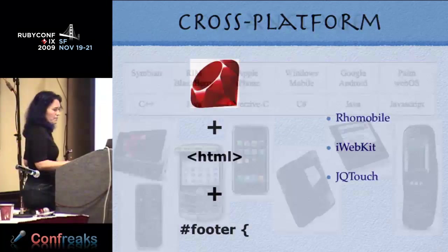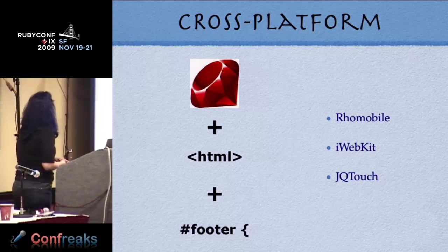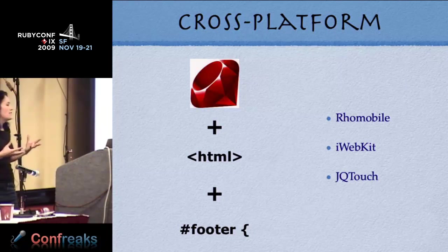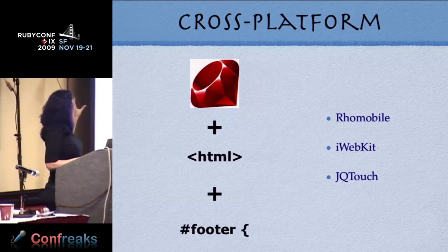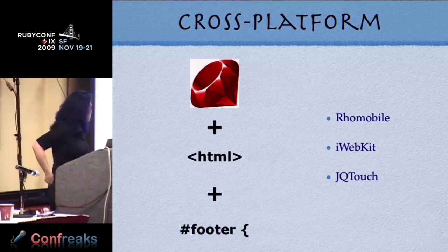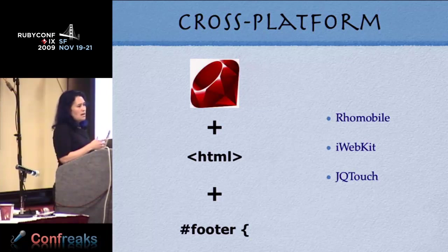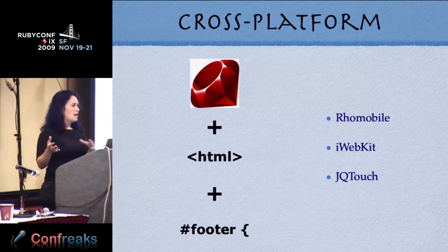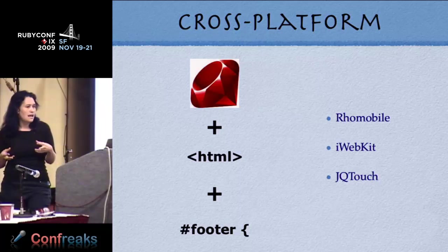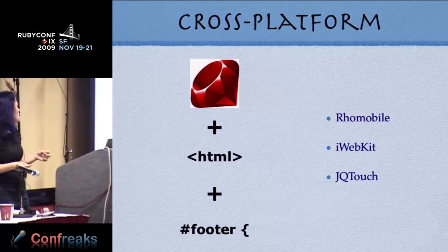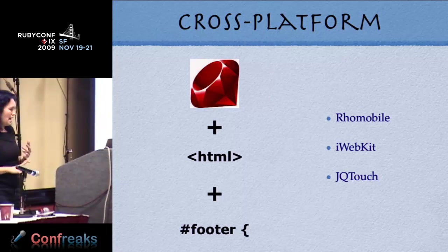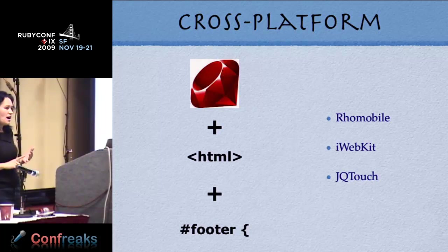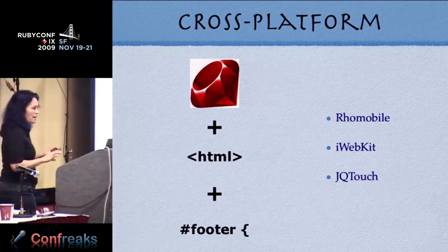This is where Ruby comes in. There's an opportunity to really solve these problems with a cross-platform framework. Combining Ruby with HTML and CSS, you can create something that has the same technologies across all these different runtimes — sharing not all of the code, because the UI still has to fit the form factor, but sharing your application logic and core features. Today I'm going to talk mostly about RhoMobile and do some live coding, and also about a couple of UI frameworks for iPhone look and feel.